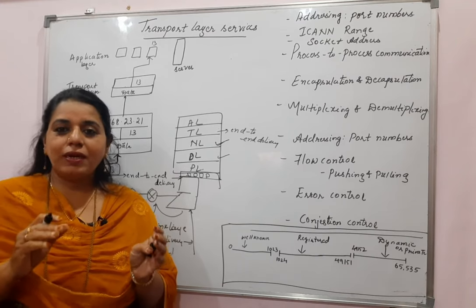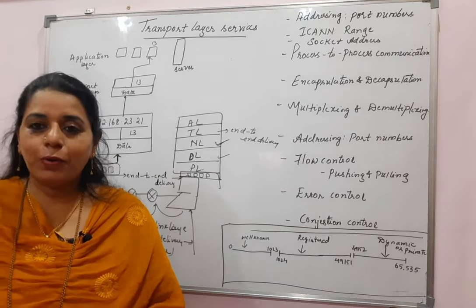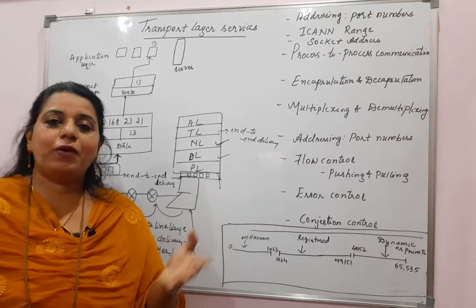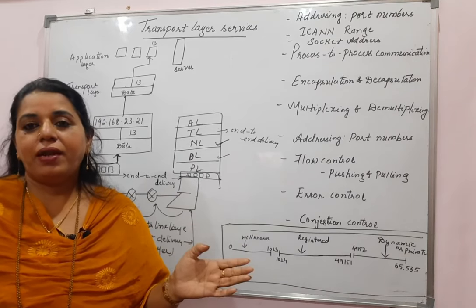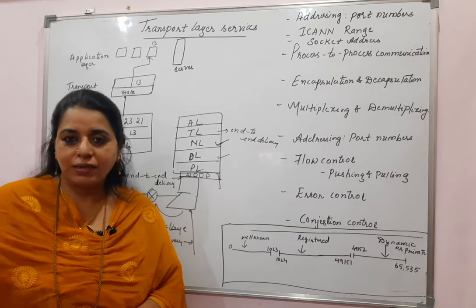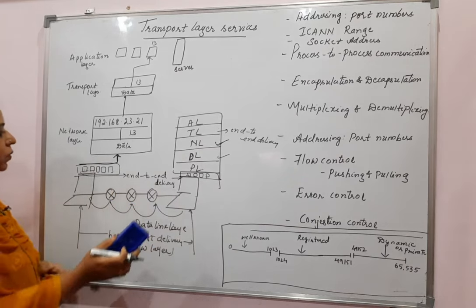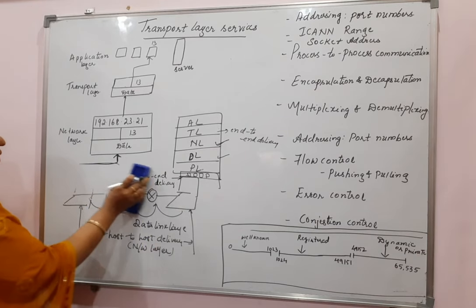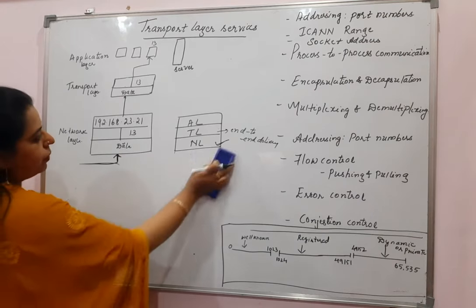In very simple words: the data link layer takes care of node-to-node delivery, the network layer takes care of host-to-host delivery, and the end-to-end delivery or port-to-port delivery is taken care of by the transport layer. With this introduction, I shall start explaining the different concepts and services provided by the transport layer.